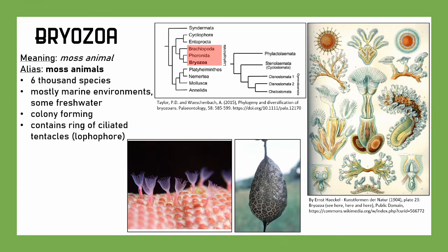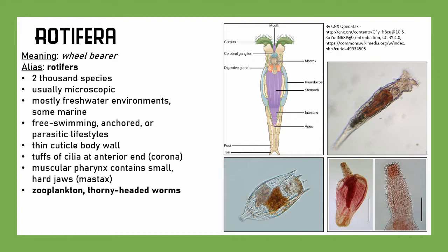Next, we have Rotifera, which means 'wheel bearer.' They're just known as rotifers. About 2,000 species, usually microscopic, and predominately in freshwater environments, unlike most aquatic species. They can be free-swimming, anchored, or even parasitic. They have a thin cuticle body wall and tufts of cilia at the anterior end making up the corona — that's the wheel-like shape. They have a muscular pharynx containing small hard jaws called a mastax. They're often the zooplankton at the base of aquatic food chains, especially in freshwater. In this classification, thorny-headed worms are also highly derived rotifers rather than their own phylum.